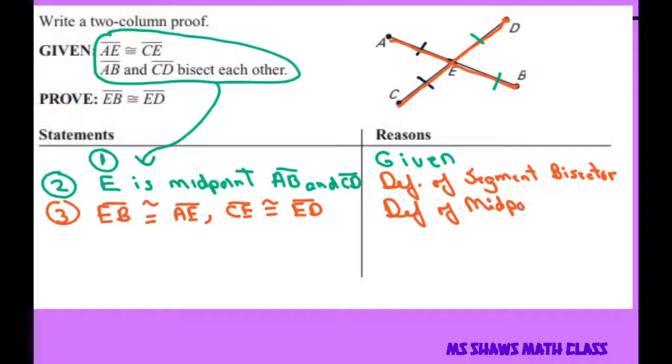Because when you're cutting the line in half, the two sides will equal each other.